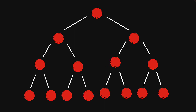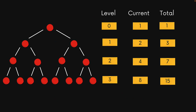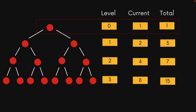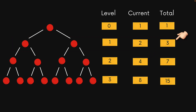Now before we jump into any formulas, let's first analyze this tree a bit more to understand how the number of nodes grow within each level of the tree. Just from visual observation, you can see that at level 0 we have one node resulting in a total count of 1. Within level 1, we have two nodes within that level, along with one node from the previous level resulting in a total of 3 nodes. Similarly, at level 2, we have 4, with 4 plus 3 giving us a total of 7. And at level 3, we have 8 nodes which combined with the previous 7 result in a total of 15.